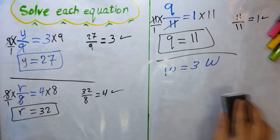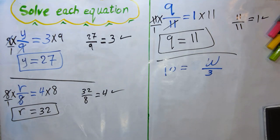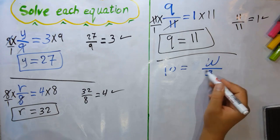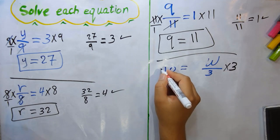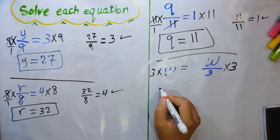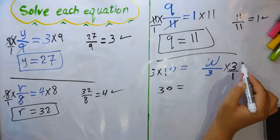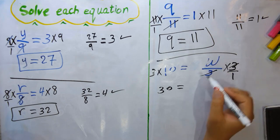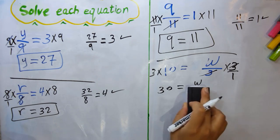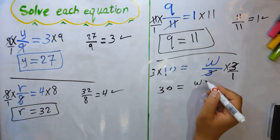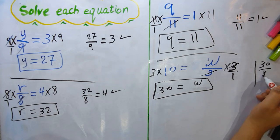Next: 10 = w/3. The variable is on the right side. The operation is divide by 3, so we multiply both sides by 3. On the left: 3 × 10 = 30. On the right, write 3 as 3/1, cancel 3 up with 3 down, leaving w. So 30 = w, or w = 30. Check: 30 ÷ 3 = 10. Correct!